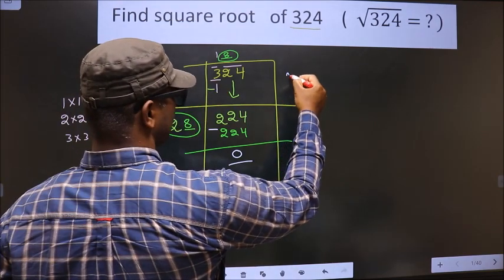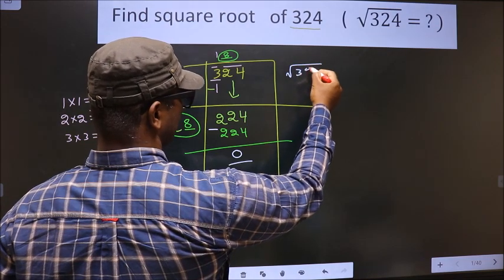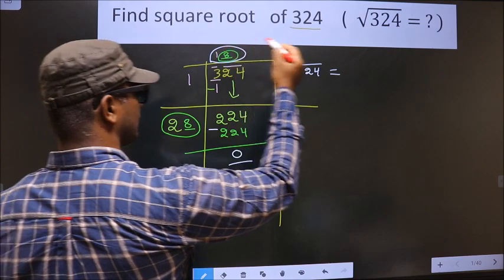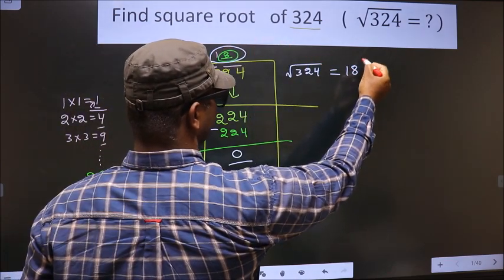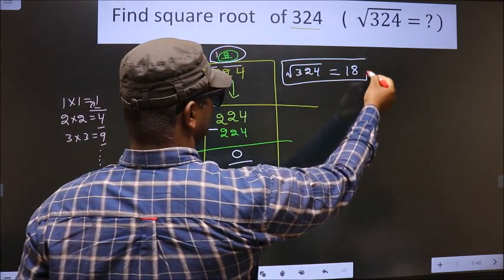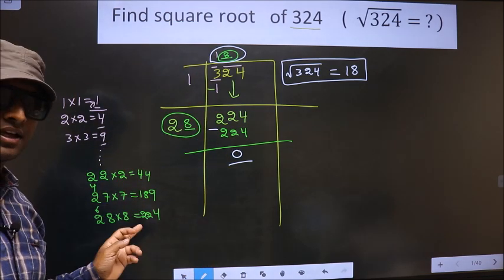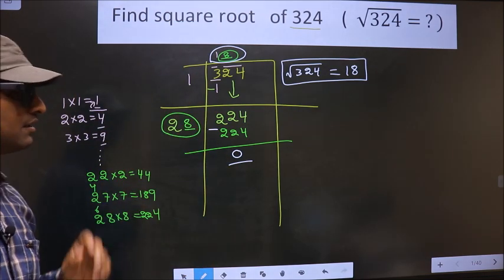And square root of 324 is this number. That is 18. So this is our answer. Am I clear? This is what we see here.